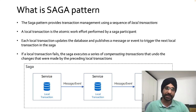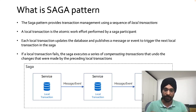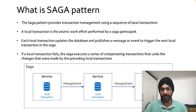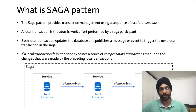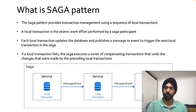One service performs its local transaction, then issues an event triggering another service to start its business flow. The second service commits its local changes and issues another command to the next service in the chain. If there is a problem, compensation is issued to roll back those changes across all services.